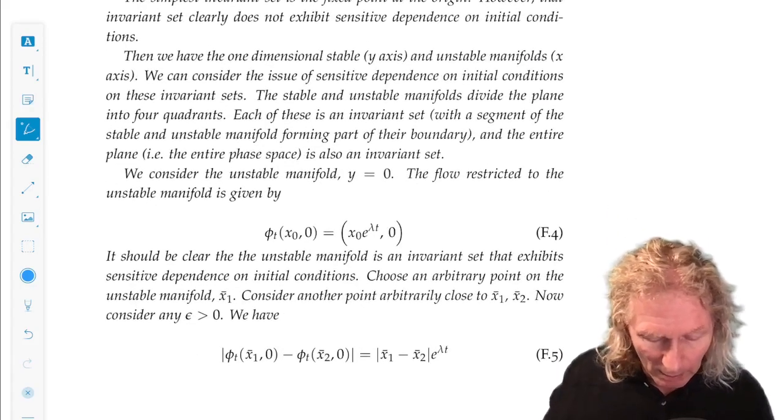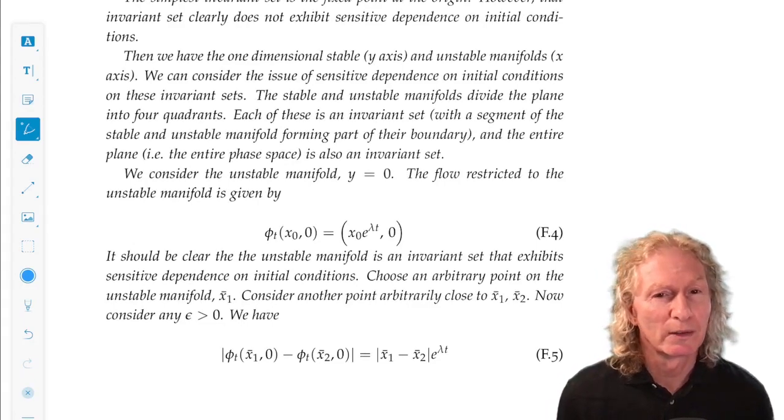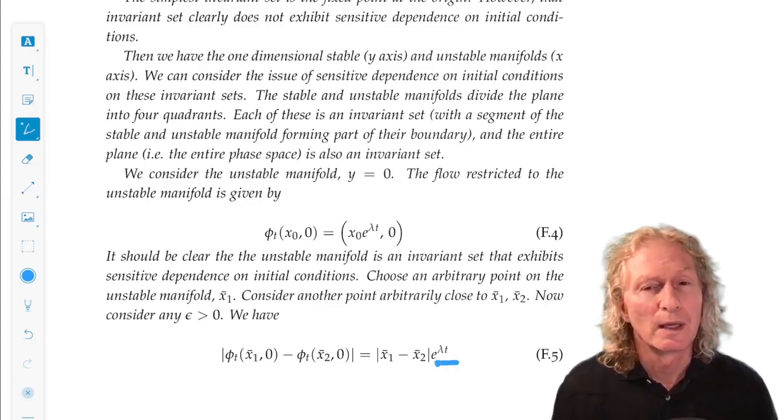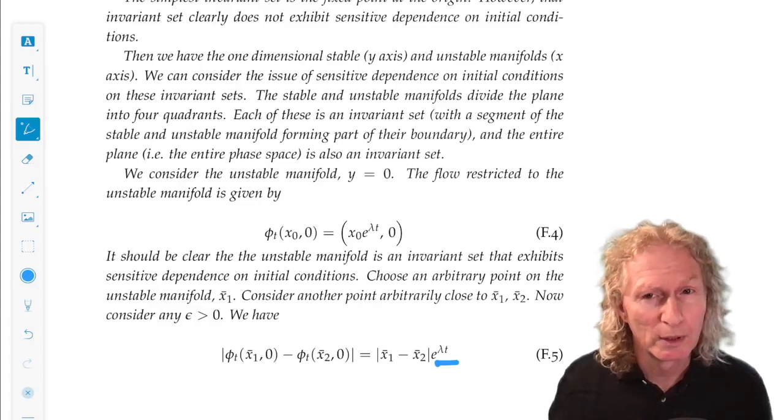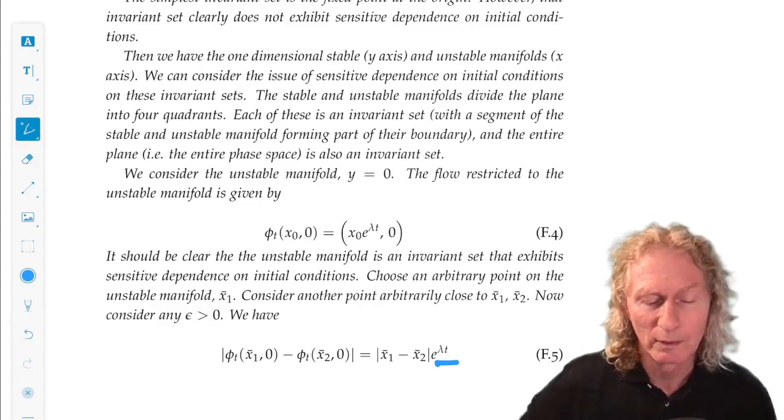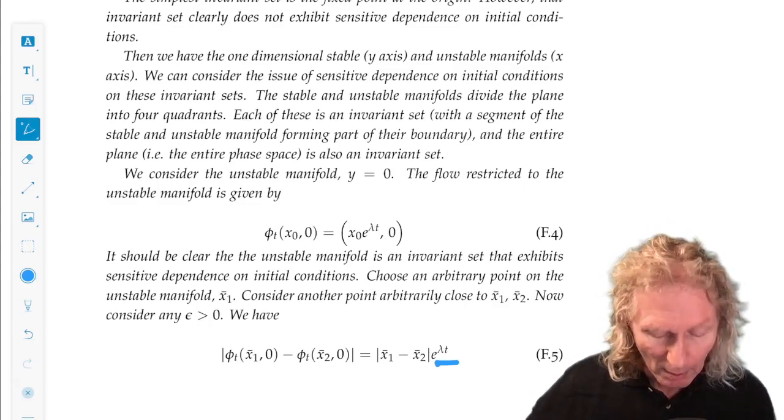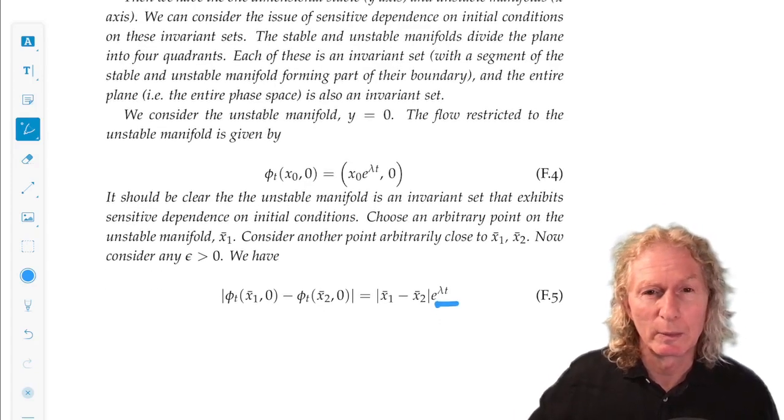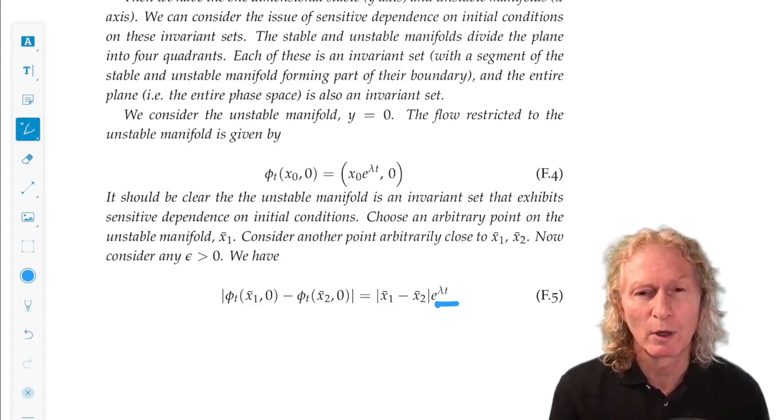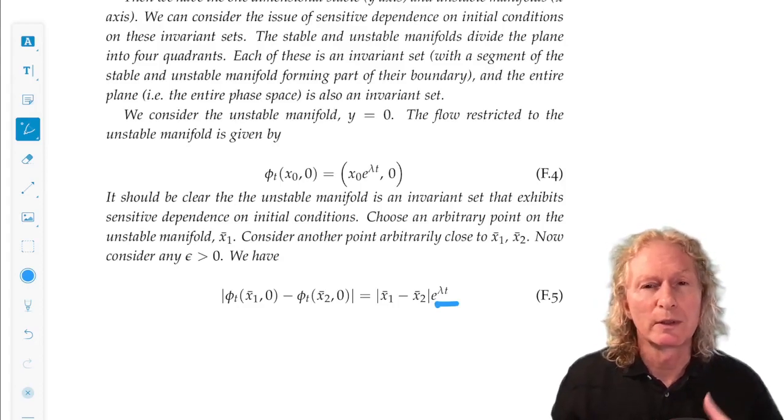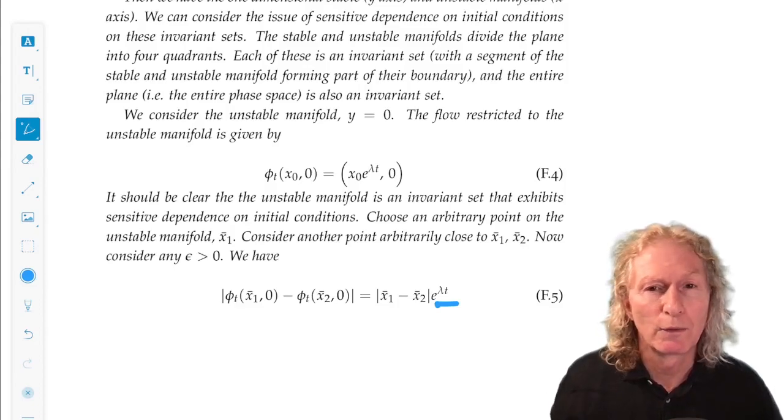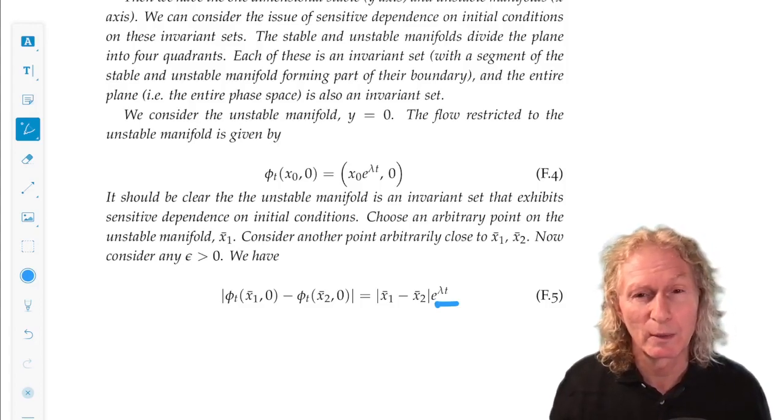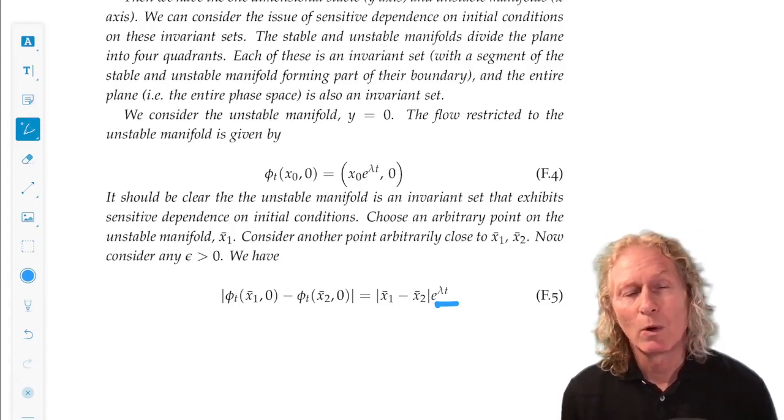But take any two points on the unstable manifold, the x-axis, and let them evolve in time. And because of this factor, e to the lambda t, they separate at an exponential rate. There's nothing about rate in the definition of sensitive dependence on initial conditions. So points in the unstable manifold exhibit sensitive dependence on initial conditions. What about an arbitrary point? Because remember, the stable and the unstable manifolds divide the plane into four regions, four invariant regions, all unbounded. Everything's unbounded that I've talked about so far, except the fixed point at the origin.